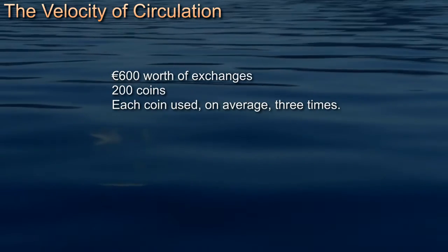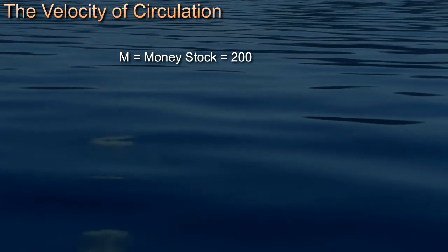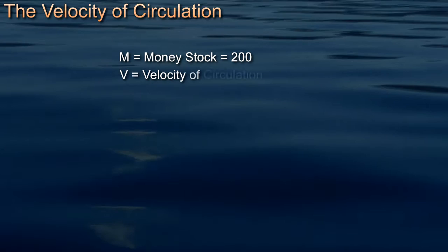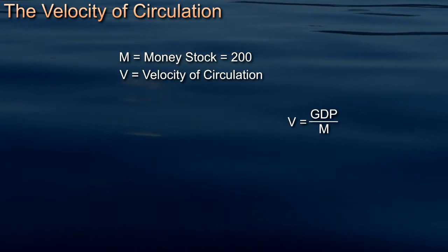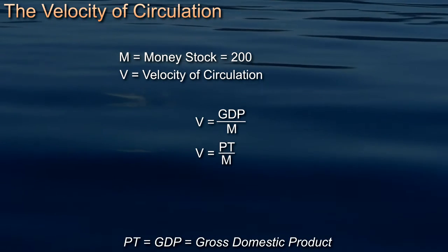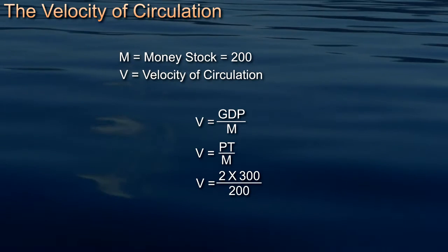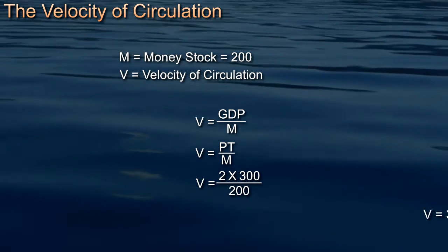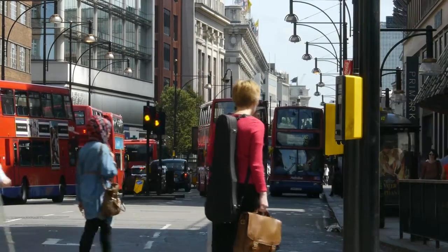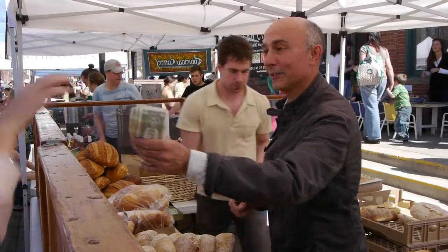If there's 600 euros worth of exchanges in the year and only 200 one-euro coins, then on average each coin will need to be used three times. If we call the money stock M, where M equals 200, then the average speed at which money changes hands — which we'll call V, the velocity of circulation — is V equals GDP divided by M, or PT divided by M, which equals 2 times 300 divided by 200, which equals 3. In a large modern economy, if we know the total output and the amount of money in circulation, it's easy to calculate V via our formula.